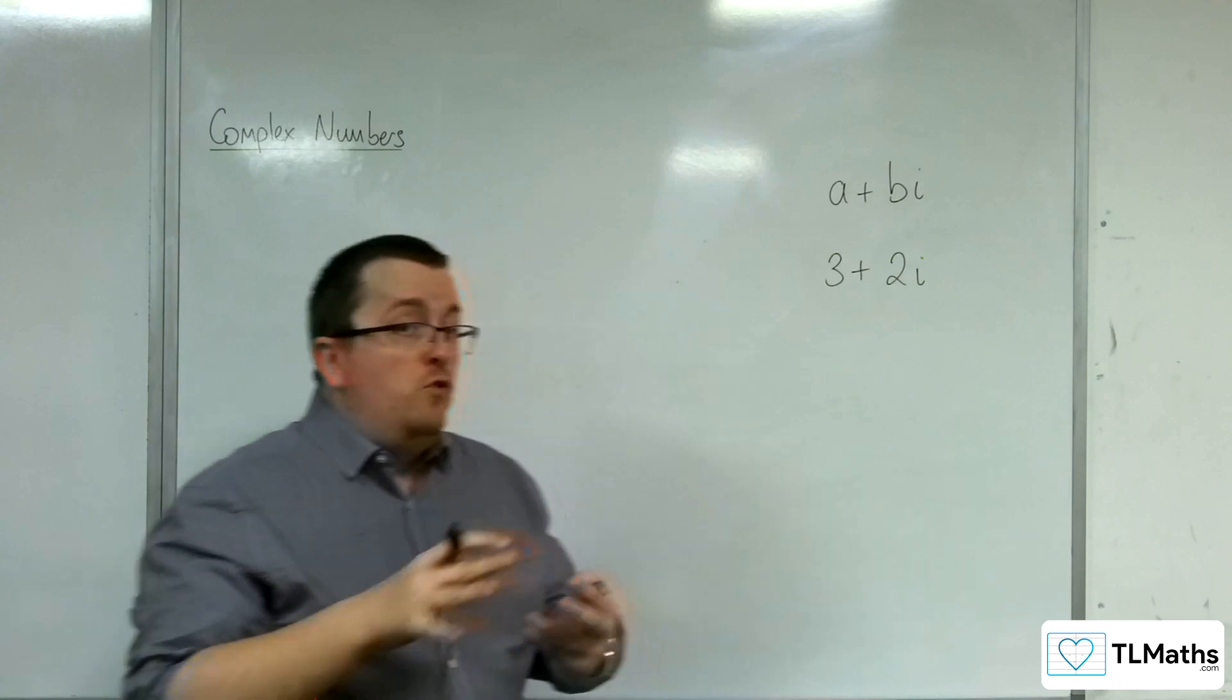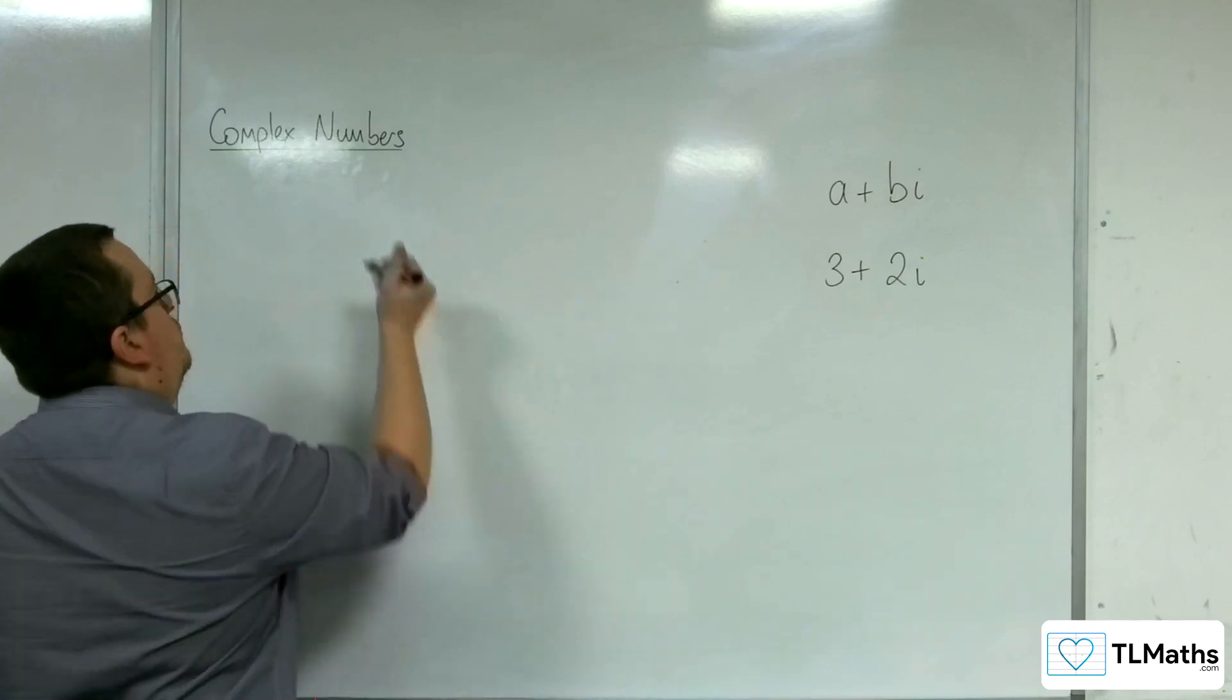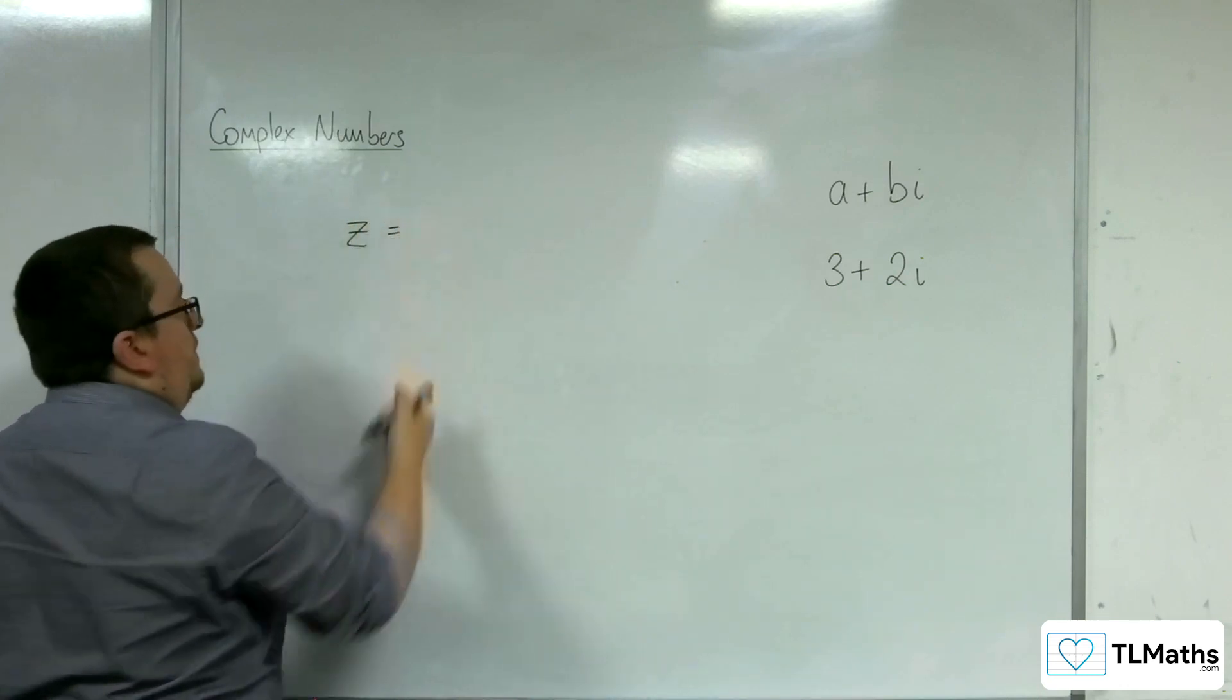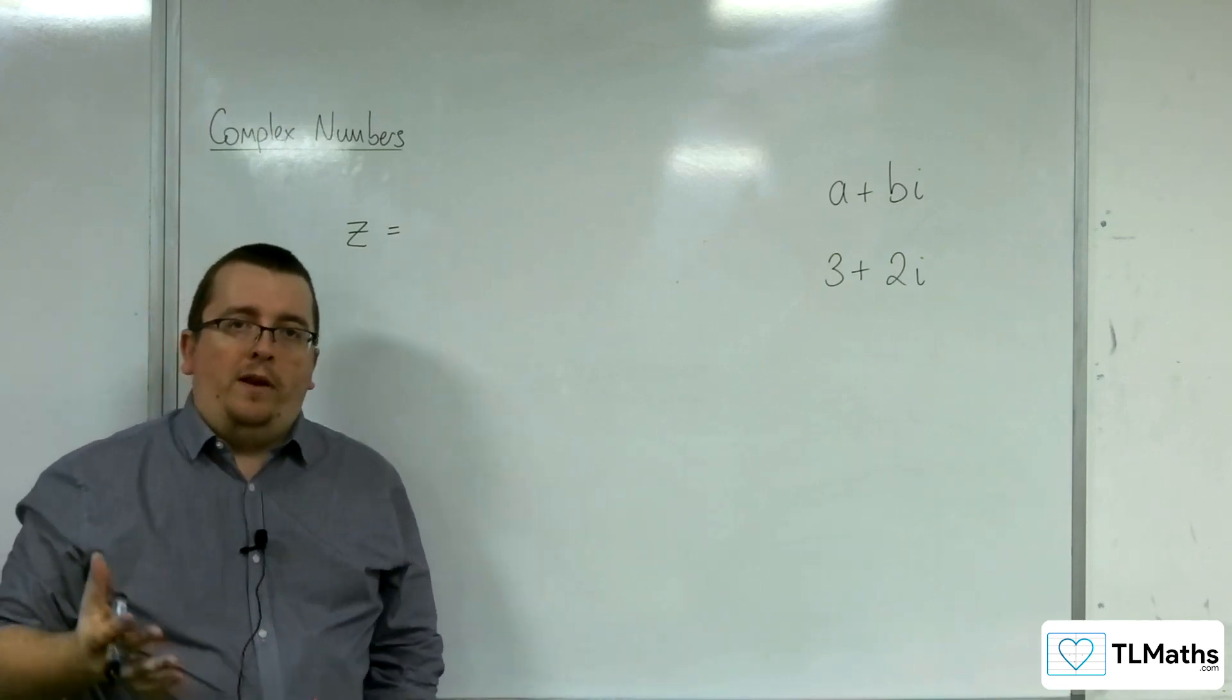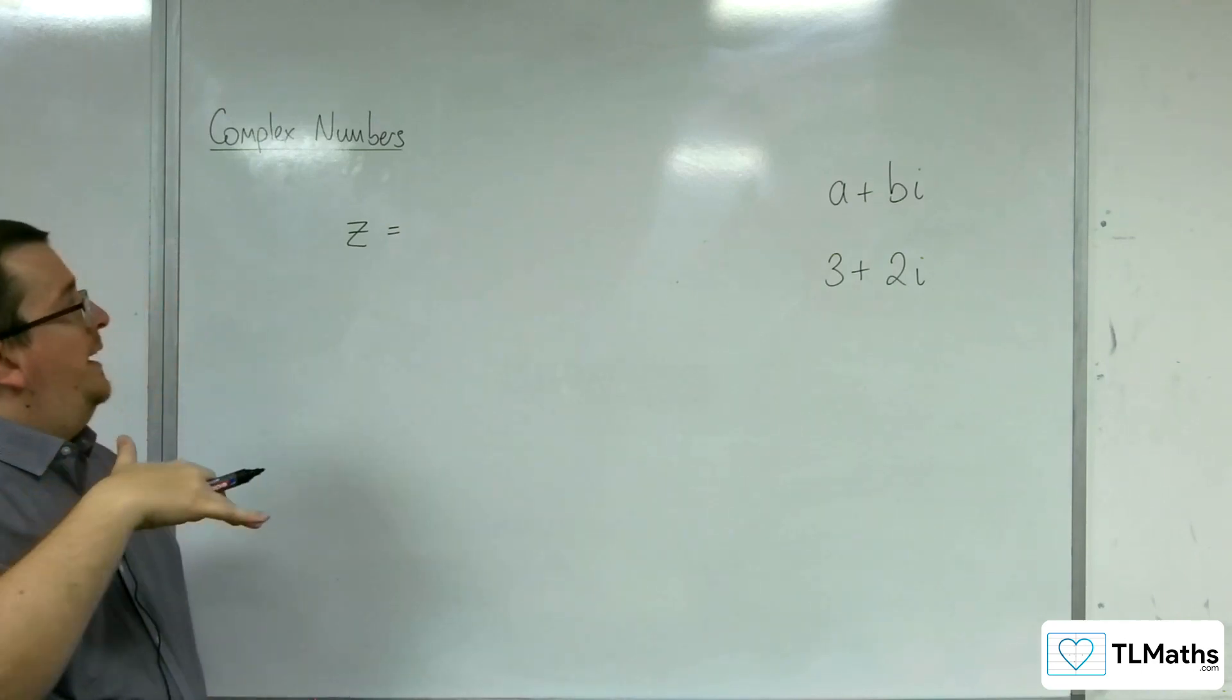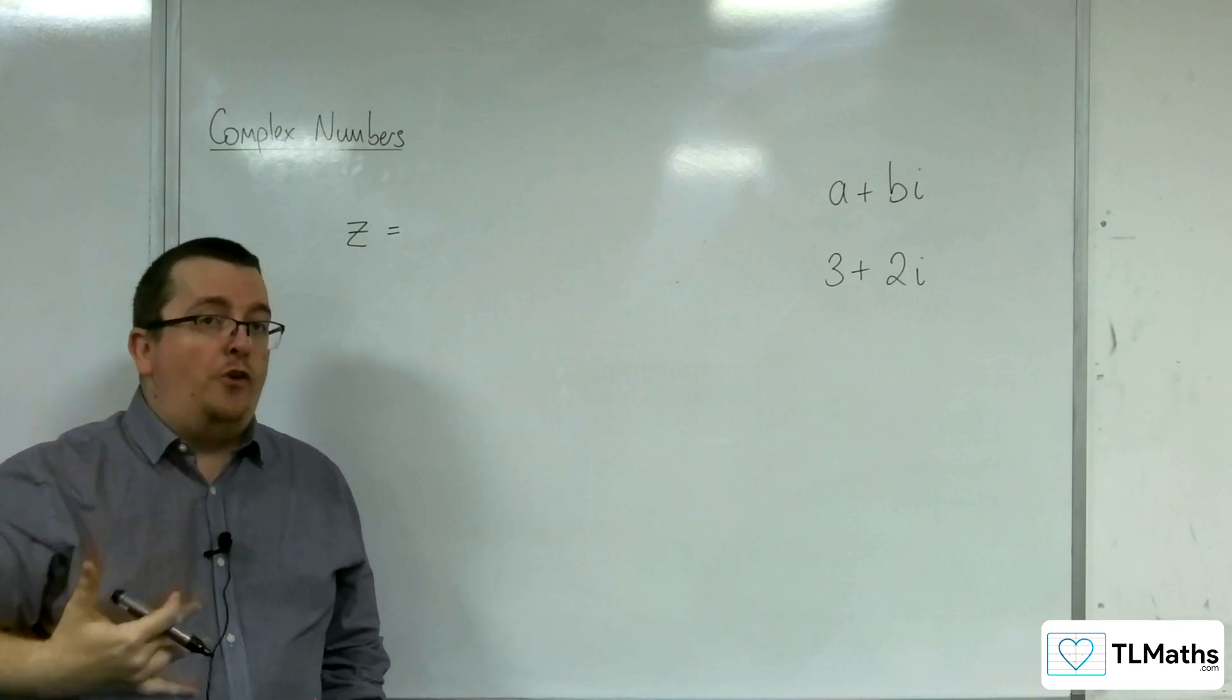However, as for a general way of writing them down, they're often referred to as z, and the reason why I put a line through the z is to make sure it's very clearly not a 2.